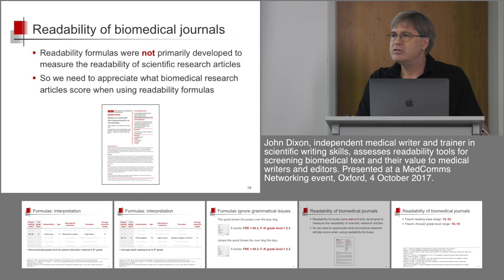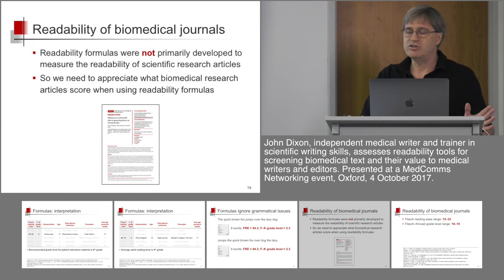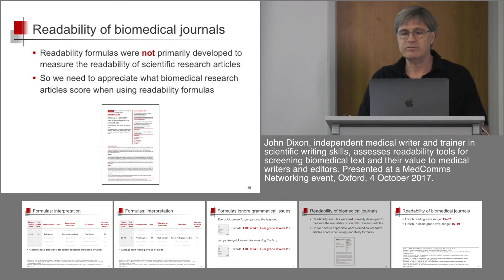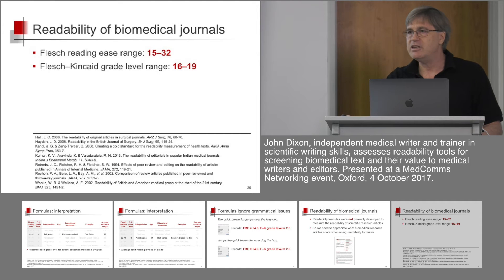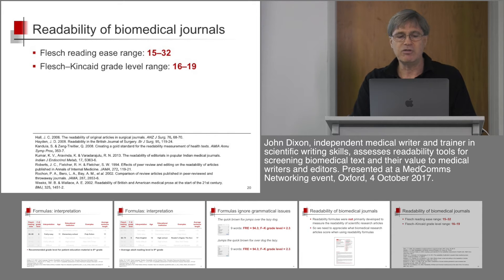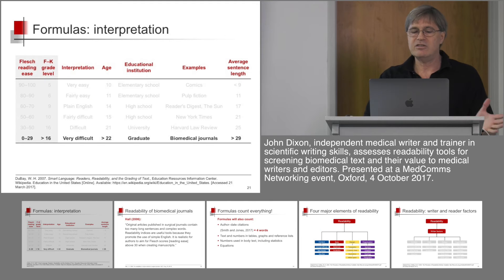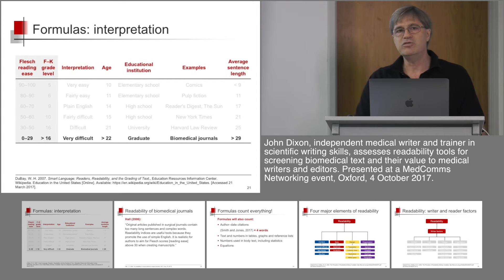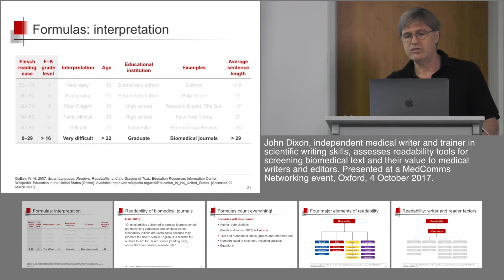What about readability of biomedical journals? Readability formulas weren't primarily developed to measure readability of scientific research articles, so we need to appreciate what biomedical research articles score when using readability formulas. Reviewing the literature — and many biomedical journals have been reviewed — we find that the reading ease is low: between 15 and around 30, and the grade level is 16 and above. So on the table we looked at before, this is very difficult reading. Interestingly, the length of sentences used in biomedical journals are generally quite long: an average of 29 and above.